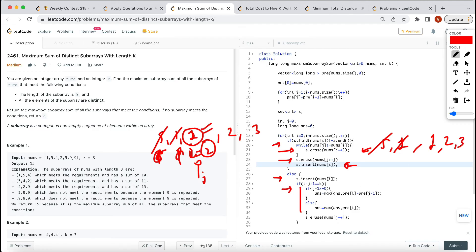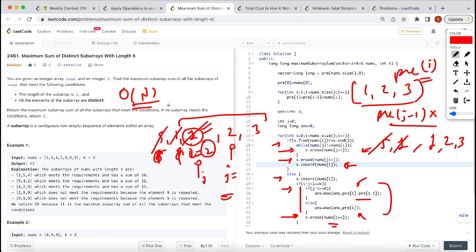We use prefix sum. Prefix of I minus prefix of J minus one to calculate the subarray sum. The time complexity is O(n) and we have extra space for creating the prefix array.